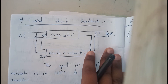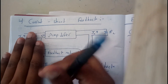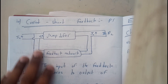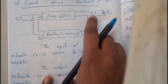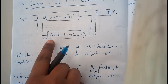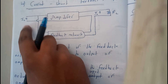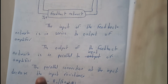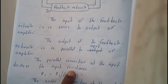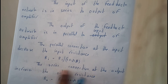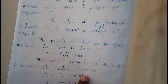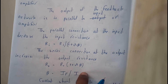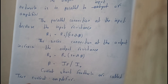Current shunt is parallel-series (PS). The input of the feedback network is in series with the output of the amplifier. The output of the feedback network is in parallel with the input of the amplifier. The parallel connection at the input decreases input resistance (divided by 1 plus A beta). The series connection at the output increases output resistance: R naught equals R naught times (1 plus A beta). Beta equals IF by I naught. Current shunt is called a true current amplifier.